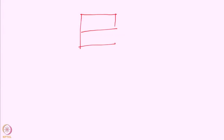We consider the following example, which is known as the battle of the sexes. The payoff matrix is given in the following way. There are two players — one wants to go to a movie and the other wants to go to a dance program. If both of them go together they have a positive utility, and if they go to different places there is no utility. This is a coordination game, which we have seen earlier.